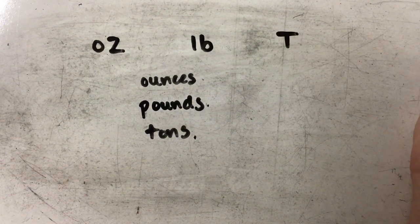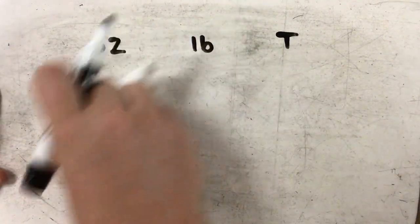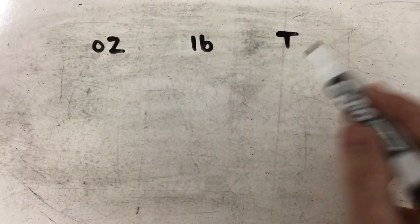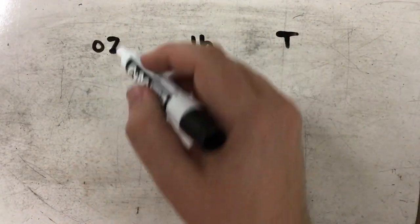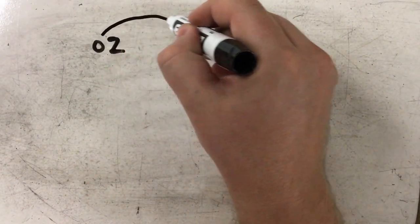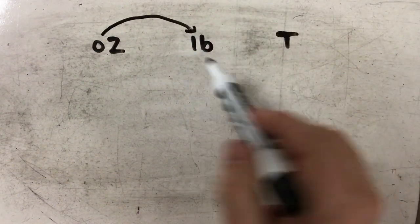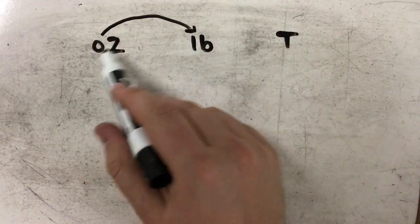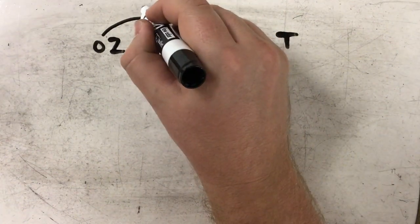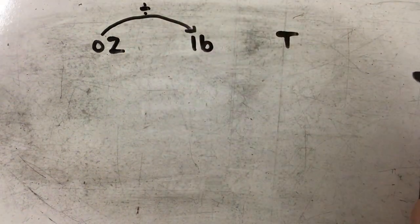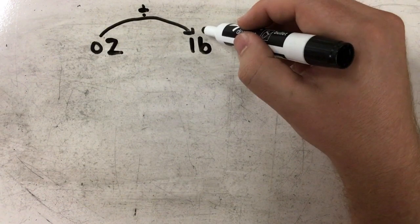Okay, again we're going to want to draw some arrows to kind of help us from where we're jumping from unit to unit. So if I'm going from a smaller unit to a larger unit, my numbers are actually going to get smaller, so my process is going to be division.